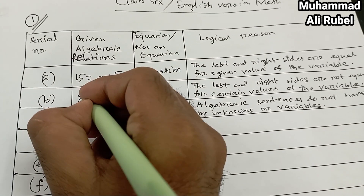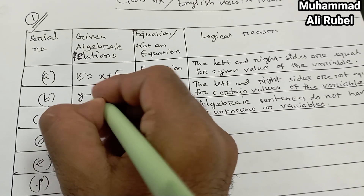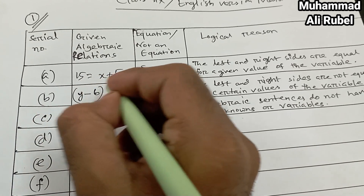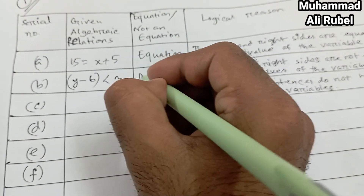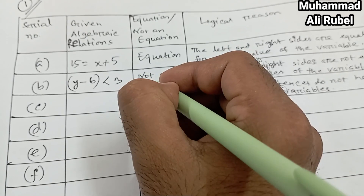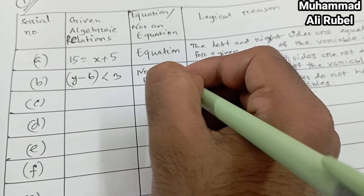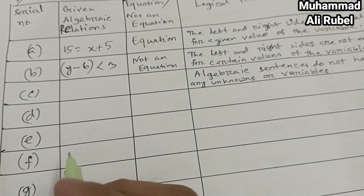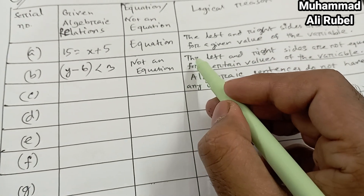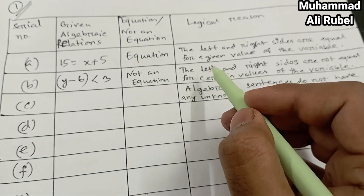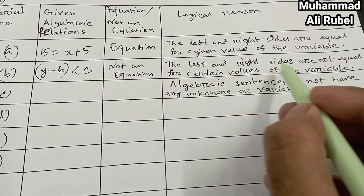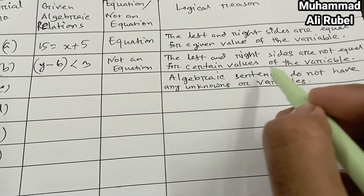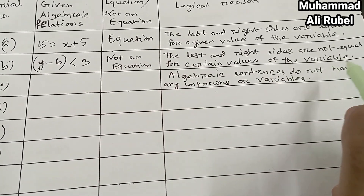Item b: y minus 6, smaller than 33. It is not an equation. Logical reason: the left and right sides are not equal for a certain value of the variable.